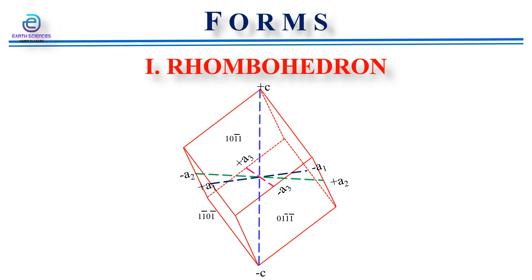From the figure it is clear that the upper front face intersects the a1 axis at a certain distance and is parallel to the a2 axis. It also cuts the a3 axis at a negative distance equal to that of the intercept on a1, and it cuts the C axis at a different distance. That is why the general symbol can be written as (h 0 h̄ l).